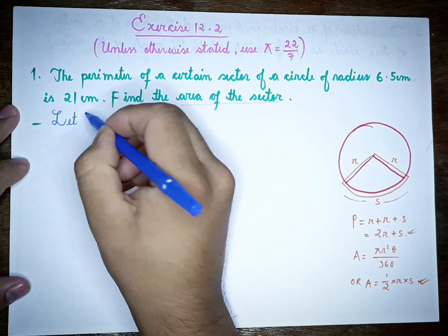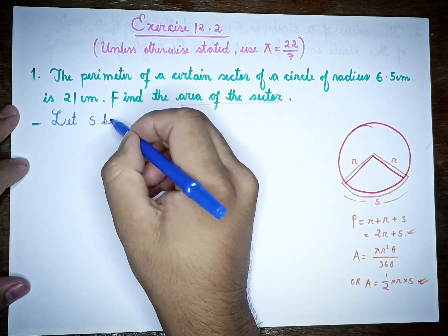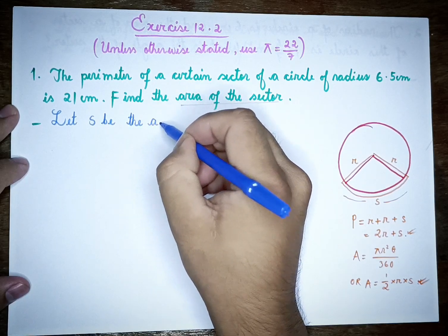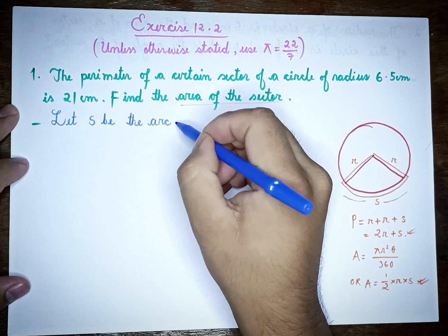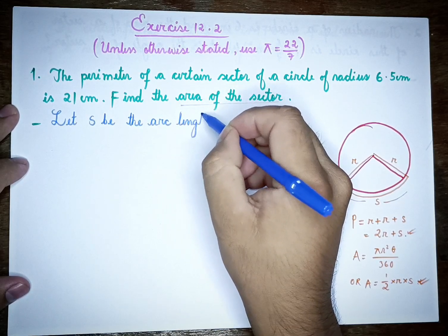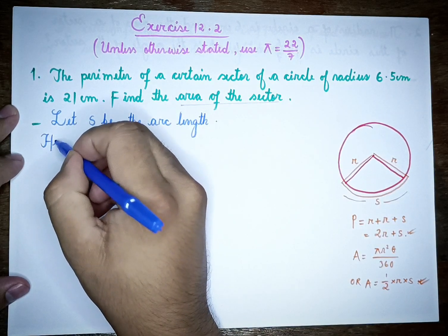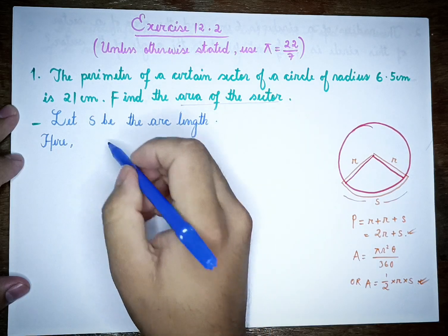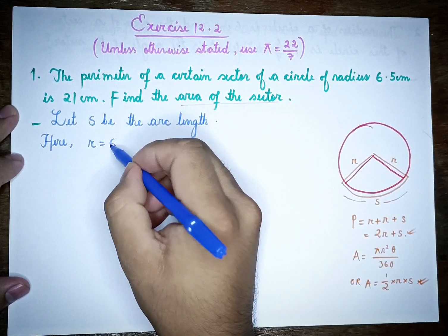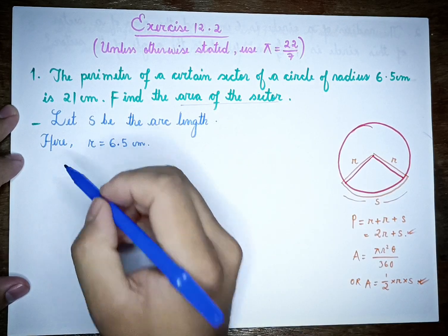Let S be the arc length. Here is the perimeter of the sector.